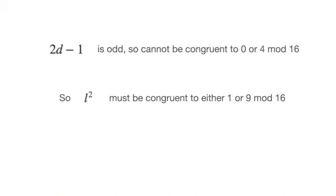For 2d-1, the restriction is especially severe. We cannot have 2d-1 congruent to 0 or 4 modulo 16, because 2d-1 is an odd number. So our only options are either 1 or 9 modulo 16. Let's split up into two cases.